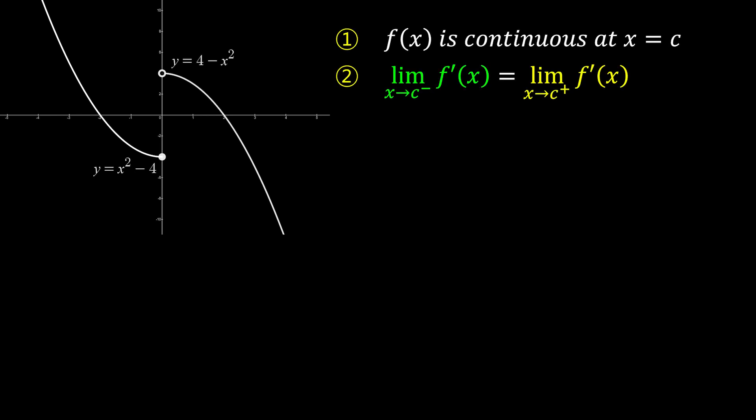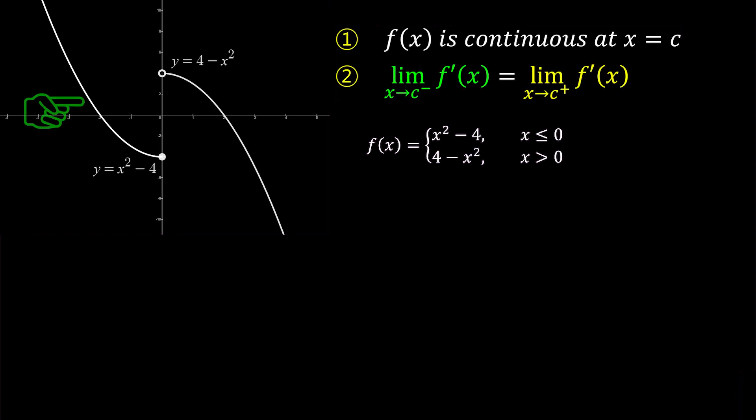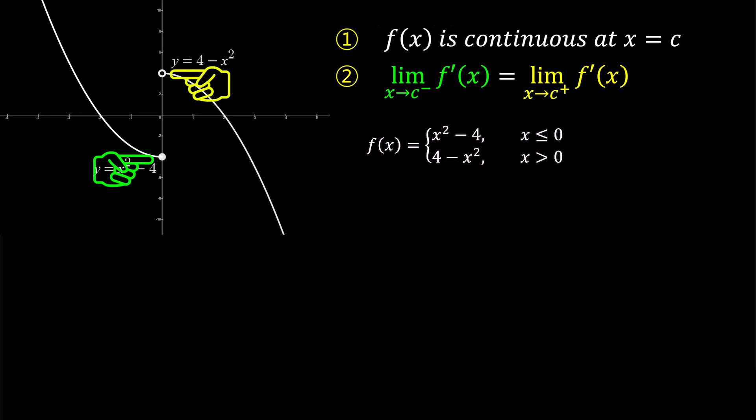Let's take a look at the first graph. For this graph to be differentiable, we must satisfy these two conditions. For x less than or equal to 0, f of x is x squared minus 4, which is concave up. For x greater than 0, it takes 4 minus x squared, which is concave down. At x equals 0, these two curves do not meet but are separate, which means we cannot draw a continuous curve without lifting the pen from the left side to the right side of 0. Therefore, f of x is not continuous at x equals 0.